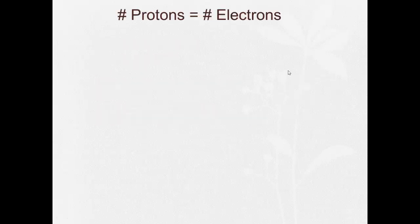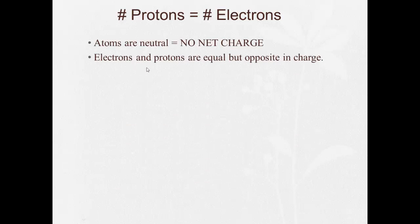Now, in a neutral atom, the number of protons is equal to the number of electrons. Because atoms, by themselves, are neutral. They have no net charge. So since electrons and protons are equal and opposite in charge, they have to have the same number of each. So in order to be neutral, let's say I have four protons. Right here I have four pluses. So I need how many minuses to balance these out and equal zero? One, two, three, four. They're equal. And then my net charge is zero.